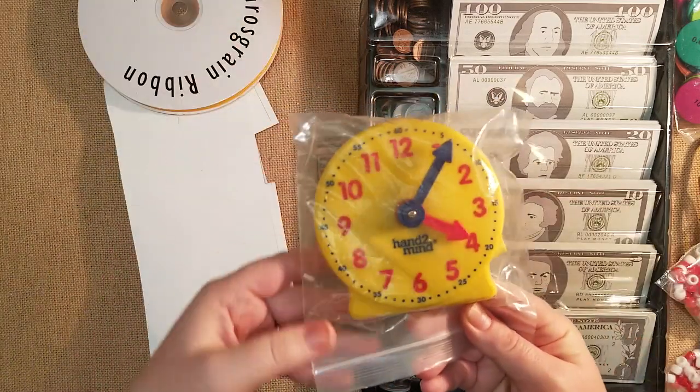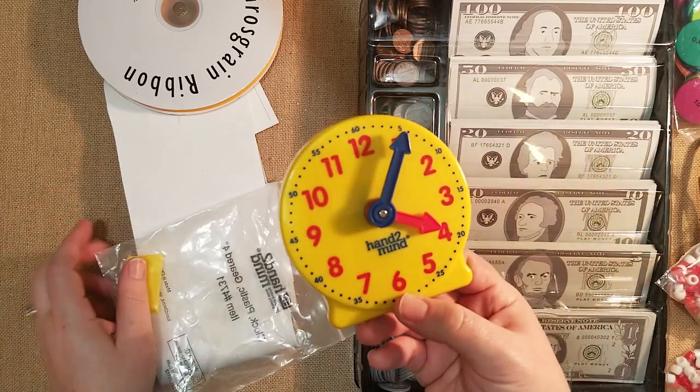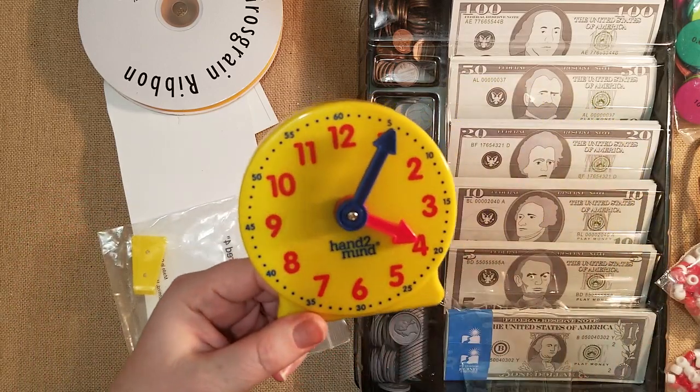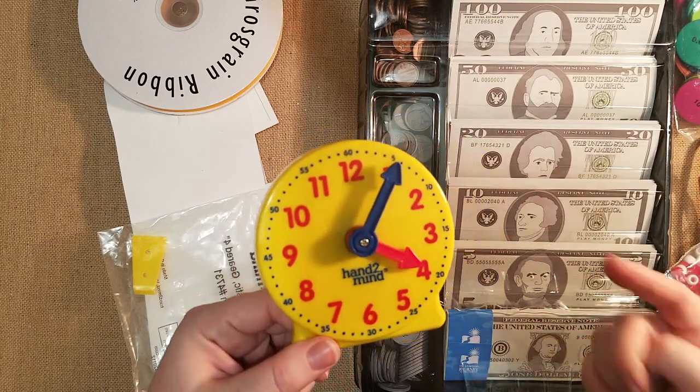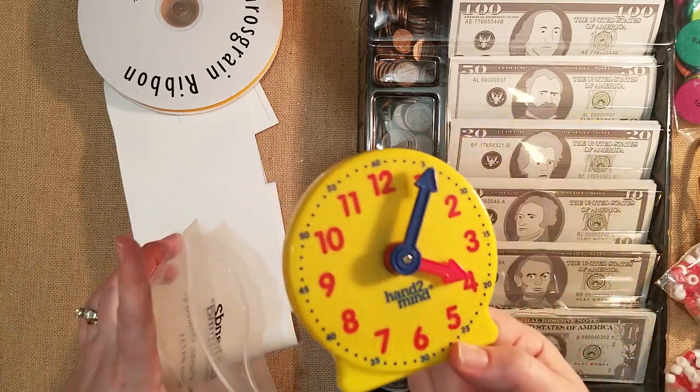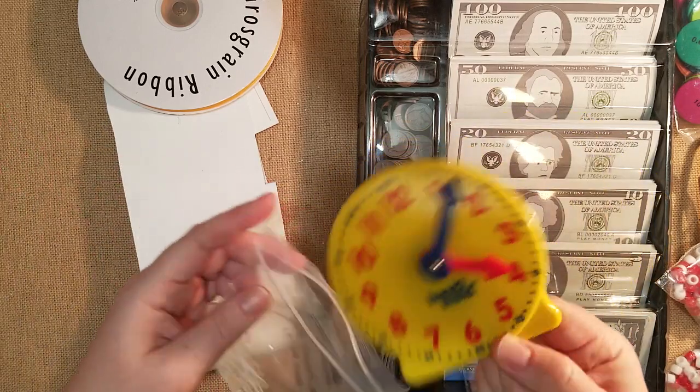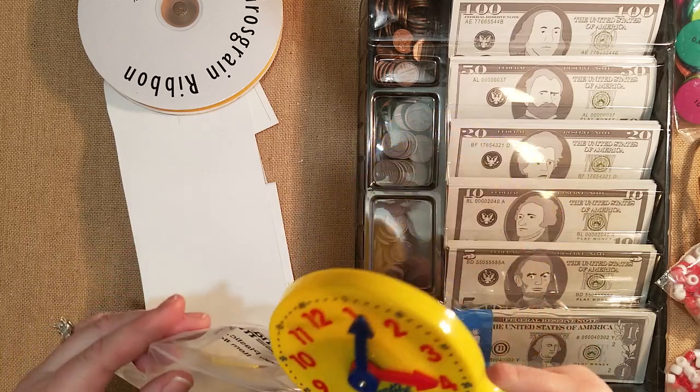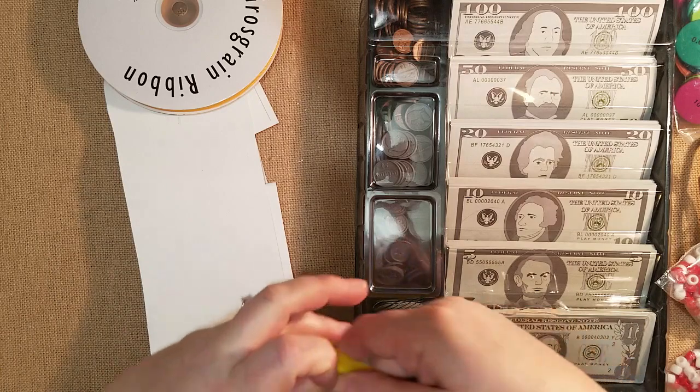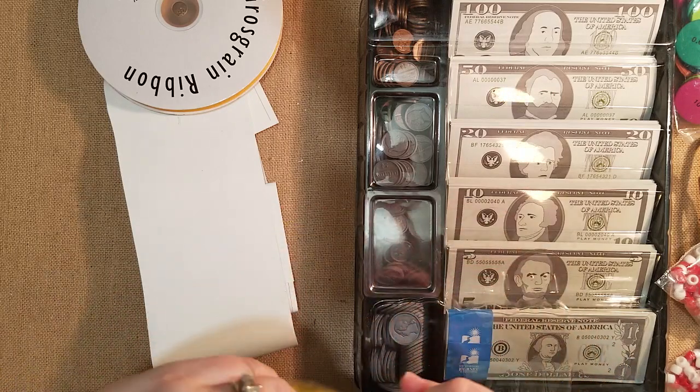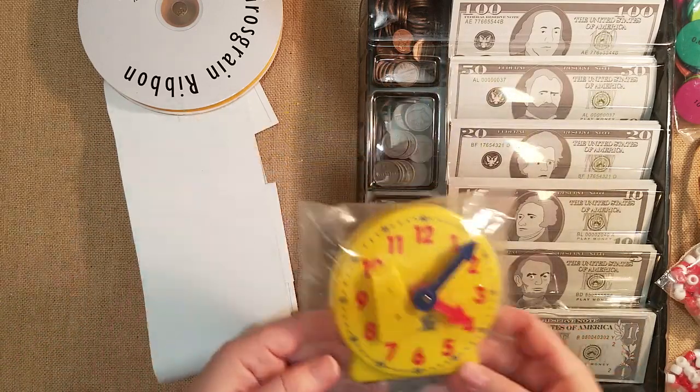This clock we have used all year long for kindergarten and my daughter's just now getting the gist of like 1:30, 2:30. I'm explaining that to her, she's already learned like 1 o'clock, 2 o'clock, 3 o'clock on this and it's really simple to have. This is great to have around the house, it's so small it has a little stand and I just give it to my daughter and I have her match the time on a digital clock and she will match it on this clock. So it works out really great and then it'll go along with any of the workbooks that I'll be using this year for teaching time.